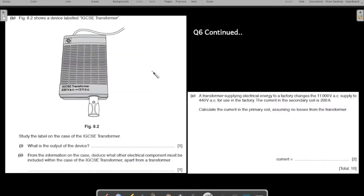Let us come to the part two. This is the same question which continues. It's a long question, 10 mark question in total. So now the B part says the figure here shows a device labeled IGCSE transformer. So that's a transformer named IGCSE. Study the label on the case of the IGCSE transformer and then answer these questions.